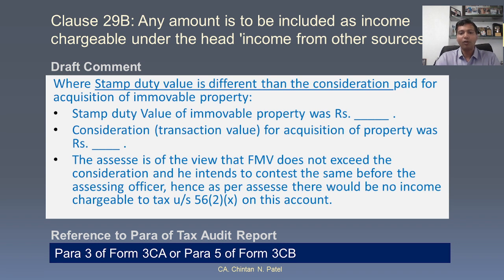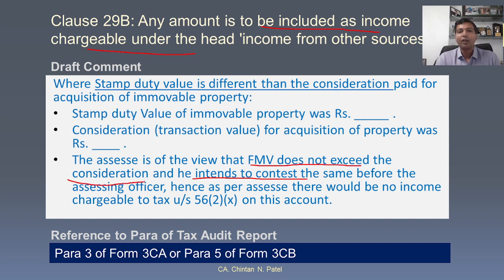Clause 23 talks about particulars of payments made to persons specified under Section 40A(2)(b). If you rely on the list provided and certified by management, it is better to mention that fact. For any amount to be included as income chargeable, wherever the assessee intends to contest that the fair market value does not exceed consideration, it is better to provide information where the stamp duty value differs from consideration paid — what the stamp duty value is and what the consideration is.